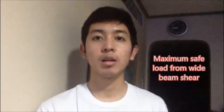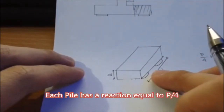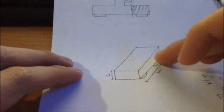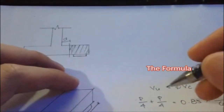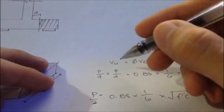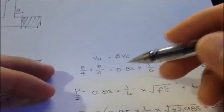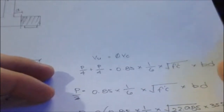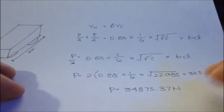I'm Johnny Cusper Z Magat and I'm going to show you how to solve the maximum safe load from the wide-beam shear. The square footing has four piles, so each pile has a reaction equal to P over 4. In this section, we can see that there are 2 piles. The formula will be VU equals PBC, where VU equals P/4 plus P/4, and PBC equals 0.85 times 1/6 times the square root of FC' times BD. The result is 34,875.37 N.